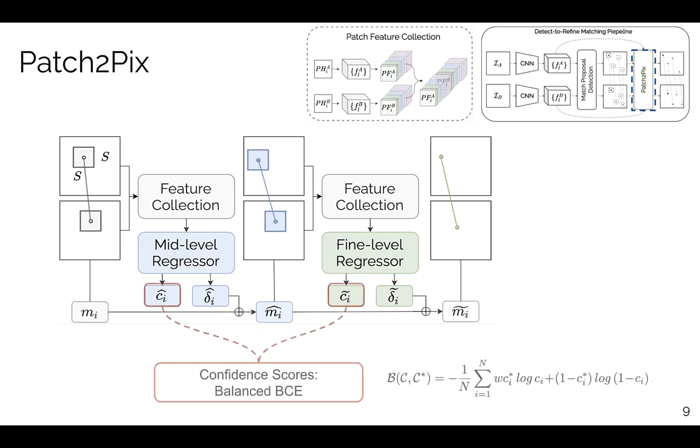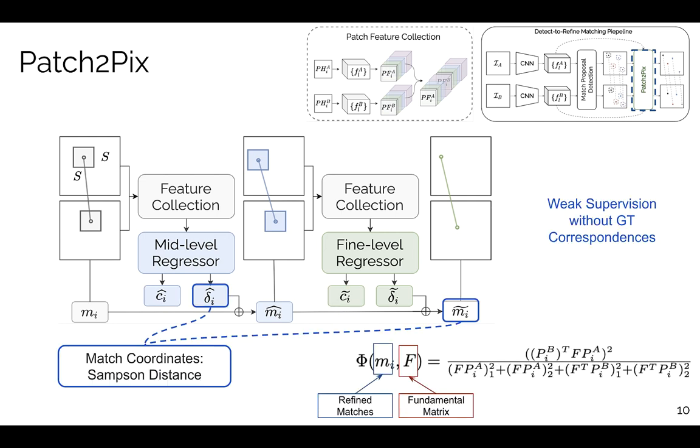For classification, we penalize the confidence score using balanced binary cross-entropy loss. To learn geometrically consistent matches at the level of weak supervision, we optimize the sampling distance of a regressed match with respect to its fundamental matrix.